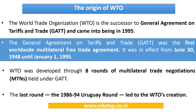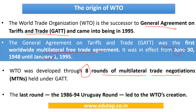WTO is the successor to GATT, which was the first worldwide multilateral free trade agreement and was in effect from June 30, 1948 until January 1, 1995. WTO was developed through 8 rounds of multilateral trade negotiations held under GATT. The 8th round, that is the last round, is popularly known as the Uruguay Round.